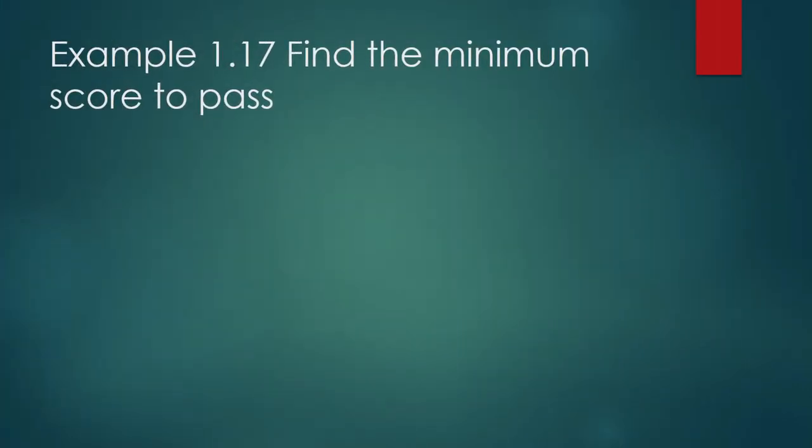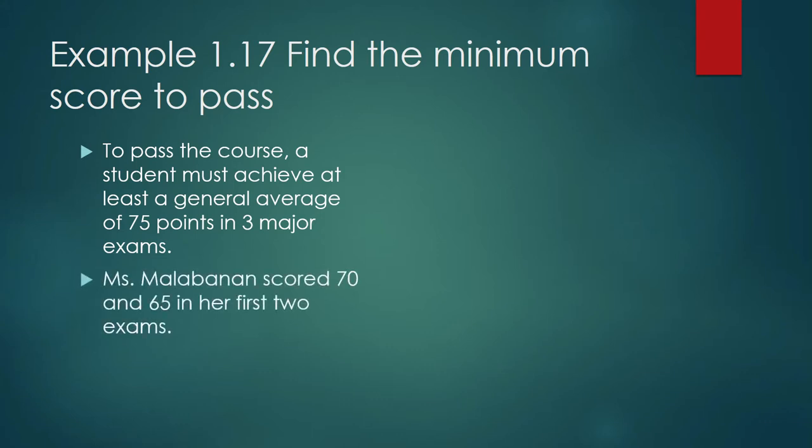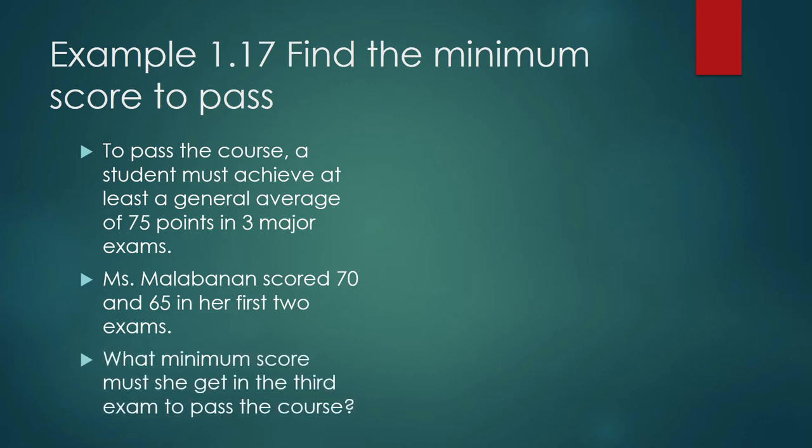Example 1.17. Find the minimum score to pass. To pass the course, a student must achieve at least a general average of 75 points in three major exams. Ms. Malabanan scored 70 and 65 in her first two exams. What minimum score must she get in the third exam to pass the course?